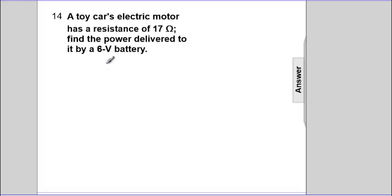So here we go. We'll solve some problems related to electrical power. A toy car's electric motor has a resistance R of 17 ohms and a potential difference of 6 volts.